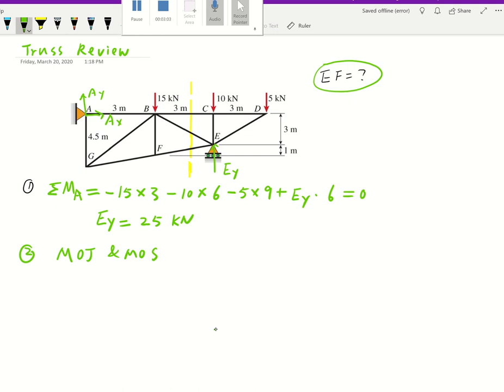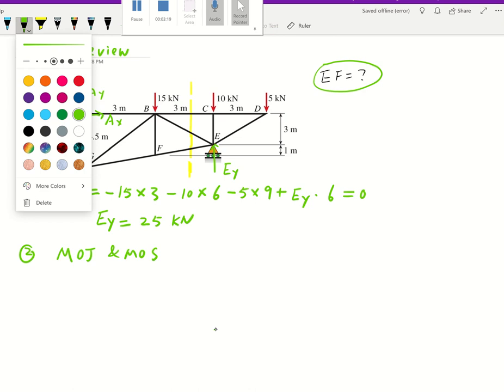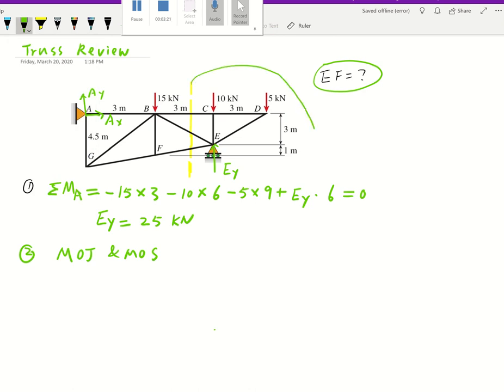When you cut the section you have left and right sections. Which one should we use? If we were to use left section we need to find reaction support AX and AY which we didn't. However if we use right section you already have EY, that seems to be a good choice. So we're going to look at the right section. That's going to be our FBD number two.